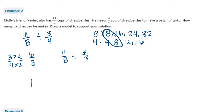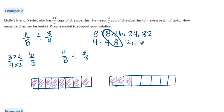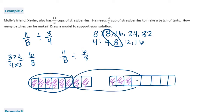We shade in eleven-eighths, then put them into groups of six-eighths. The first group of six-eighths is counted out, then the next group — but we only have five out of the six shaded in the second group. So this equals one and five-sixths batches.